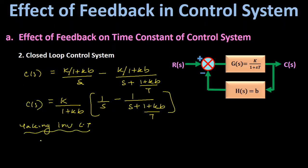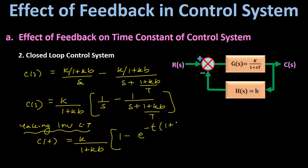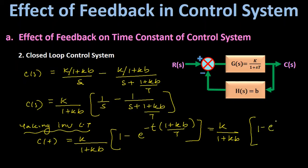Taking the inverse Laplace transform, the output response c(t) = [K/(1 + Kb)] · (1 − e^(−t·(1+Kb)/T)), which can be written as [K/(1 + Kb)] · (1 − e^(−t/(T/(1+Kb)))). Since the denominator of the small t in the exponent gives the time constant, the time constant of the closed loop system is equal to T/(1 + Kb).